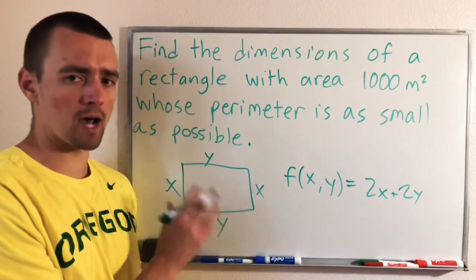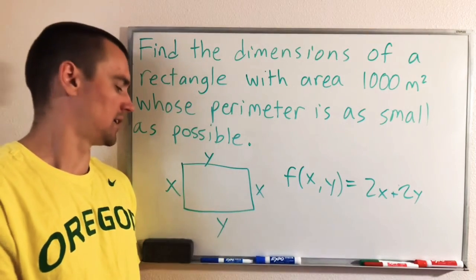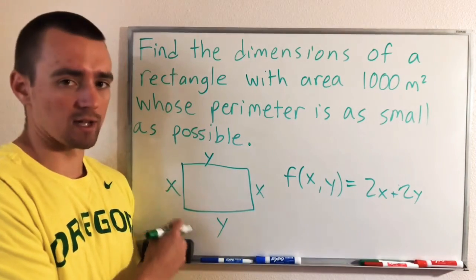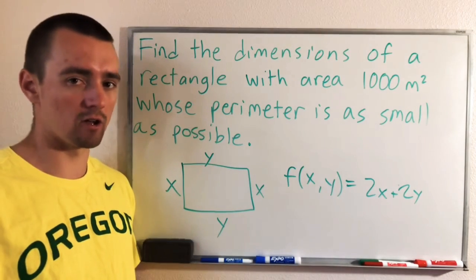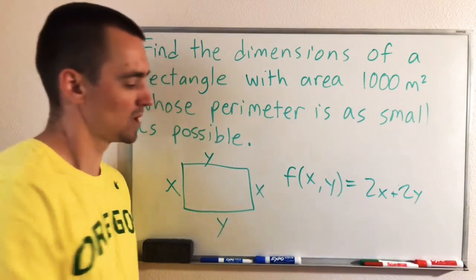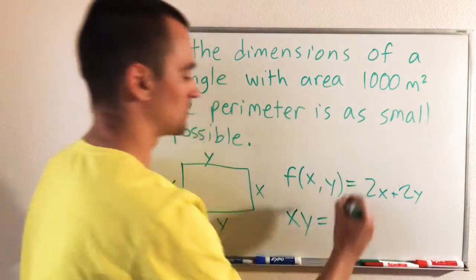So if you want to think about how to represent that in terms of this rectangle right here, the area of a rectangle is its width times its height, right? If we multiply X times Y, that would give us the area of this rectangle. So if we do X times Y, we know that the area has to be 1,000.